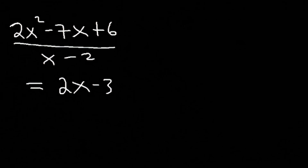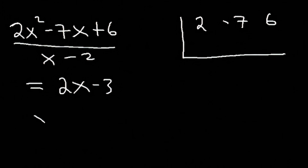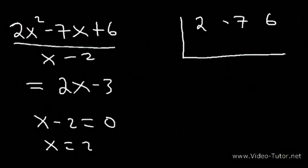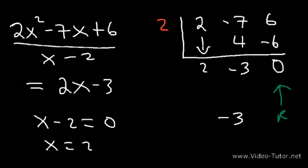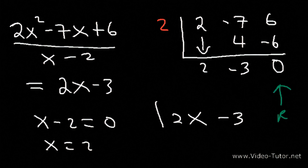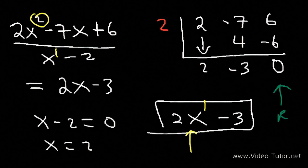Now let's see if we can get the same answer using synthetic division. Write the coefficients of the numerator: 2, negative 7, and 6. We're dividing by x minus 2, so setting it equal to 0 gives x equals 2 — use 2 here. Bring down the 2. 2 times 2 is 4. Negative 7 plus 4 is negative 3. 2 times negative 3 is negative 6. 6 plus negative 6 is 0 — that's the remainder. Negative 3 is the constant and 2 carries the x, giving 2x minus 3. You can divide polynomials by factoring, long division, or synthetic division.